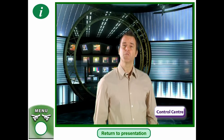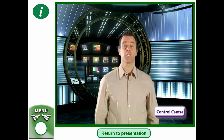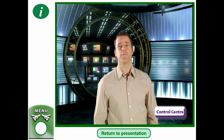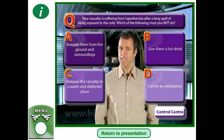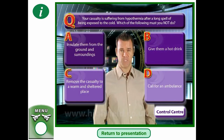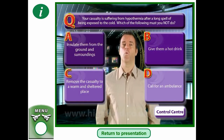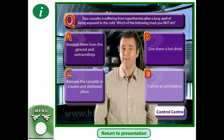Your casualty is suffering from hypothermia after a long spell of being exposed to the cold. Which of the following must you not do? A: Insulate them from the ground and surroundings. B: Give them a hot drink. C: Remove the casualty to a warm and sheltered place. Or D: Call for an ambulance.